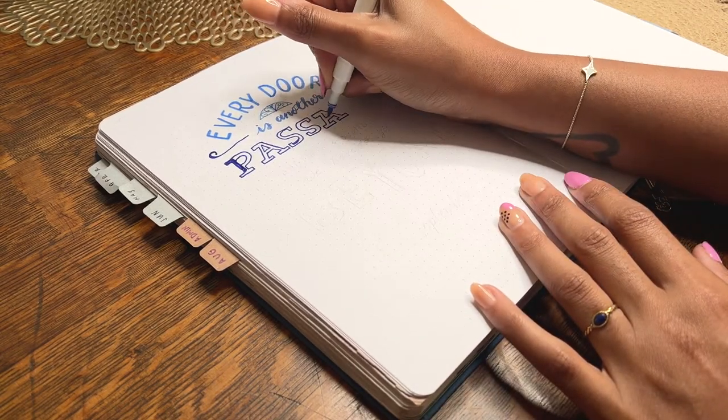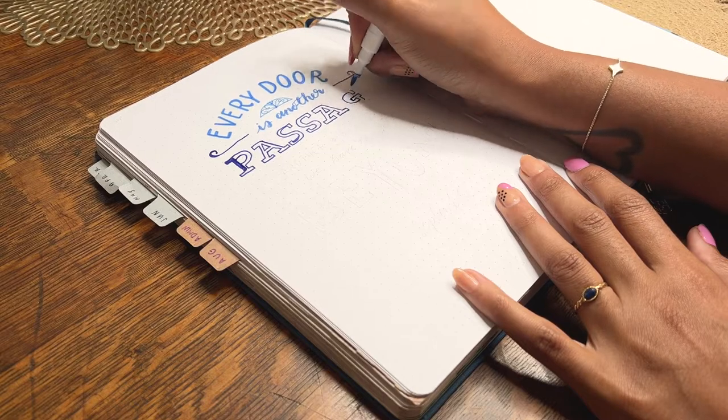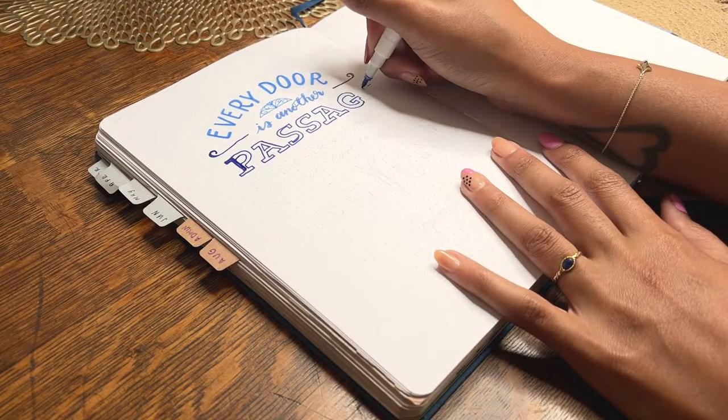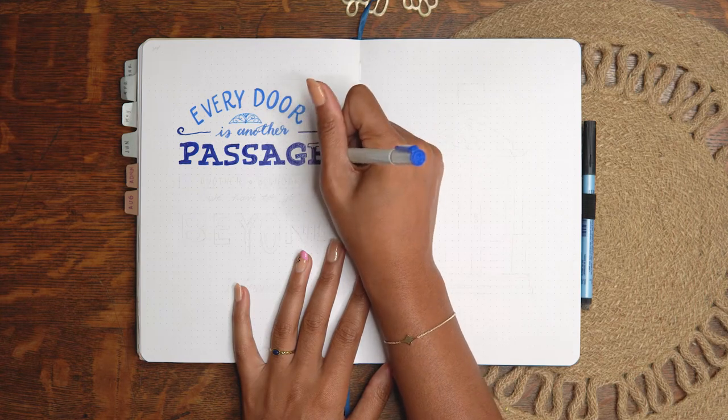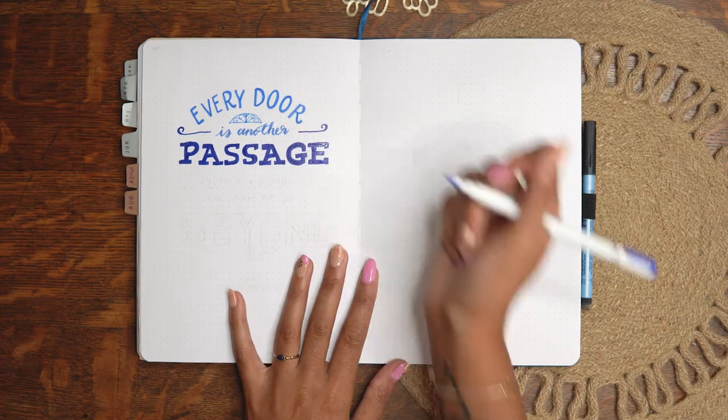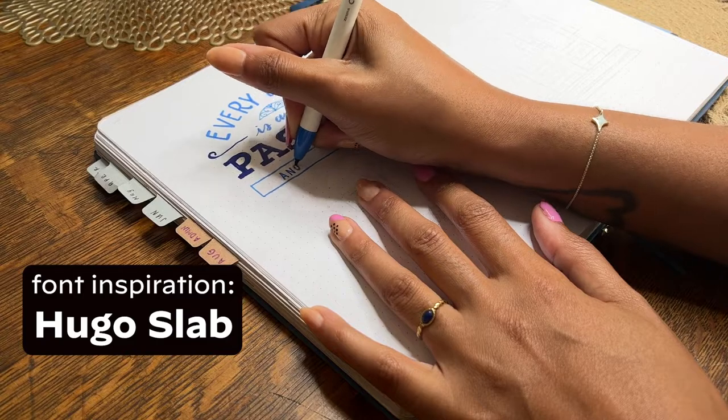For the lettering itself I'm using a combination of a sort of natural sans serif, a script, and a slab serif for the word passage. If you're curious I'm using a font called Hugo Slab for the inspiration.